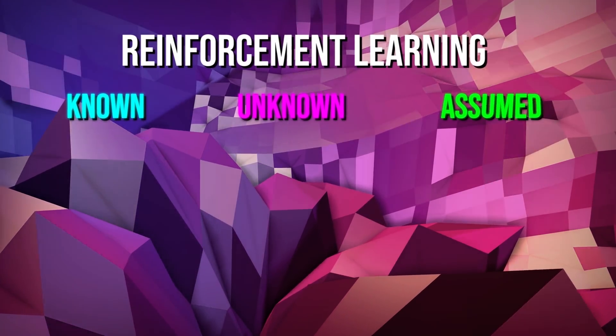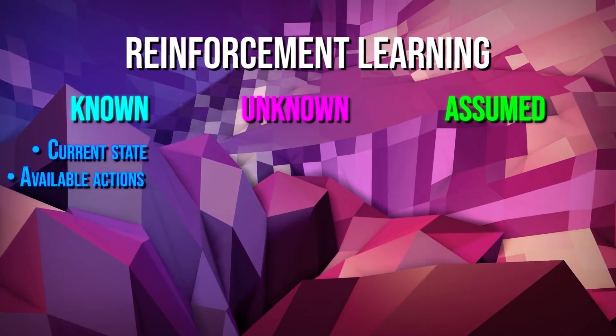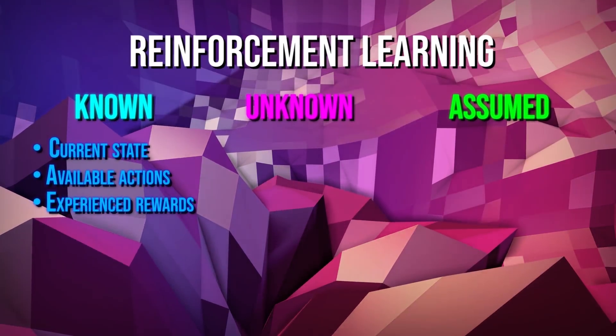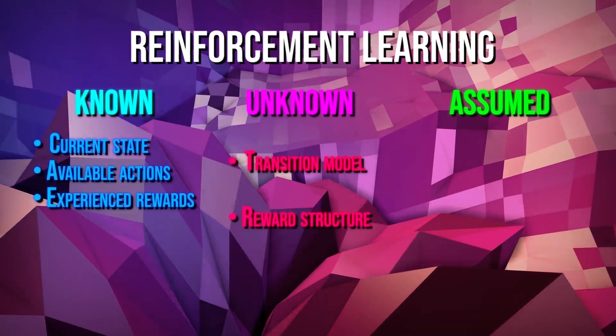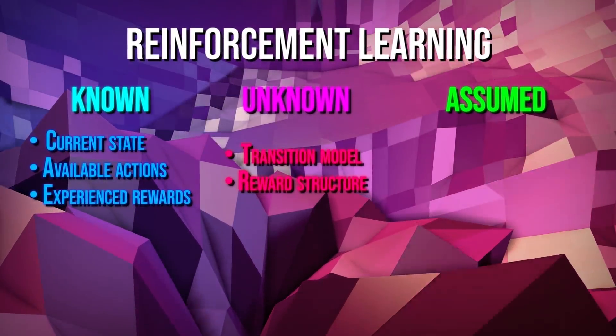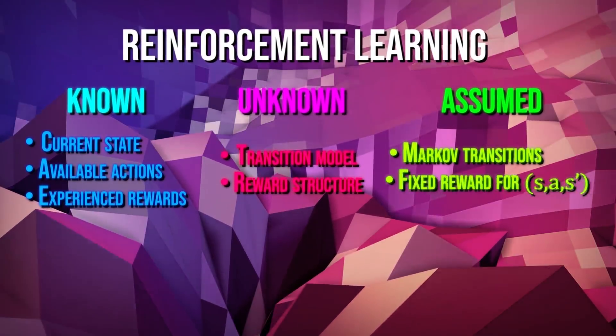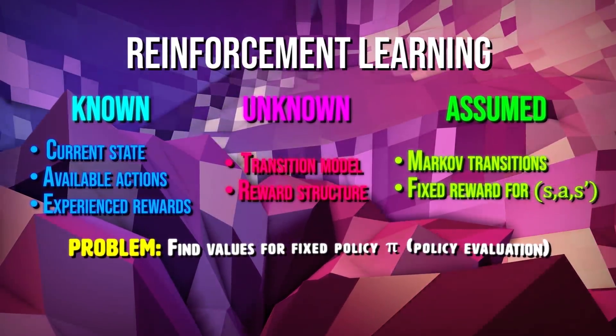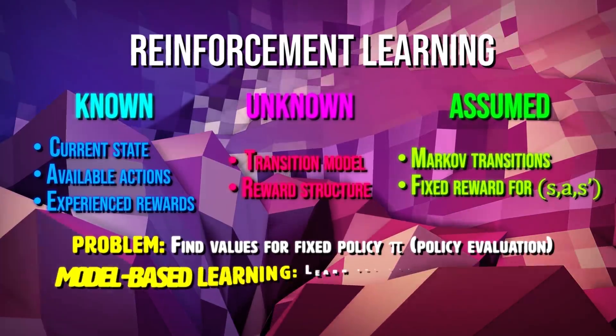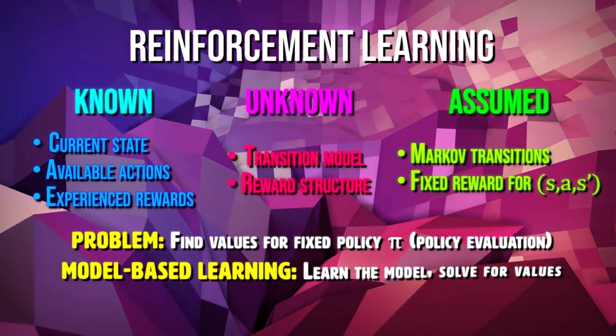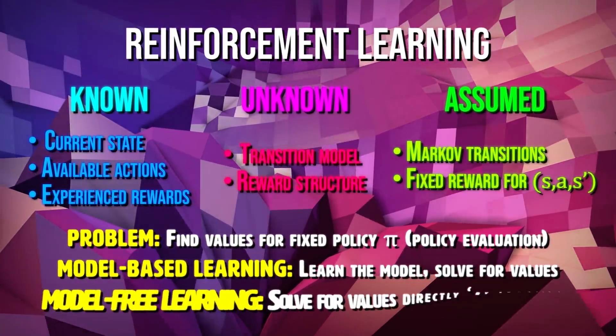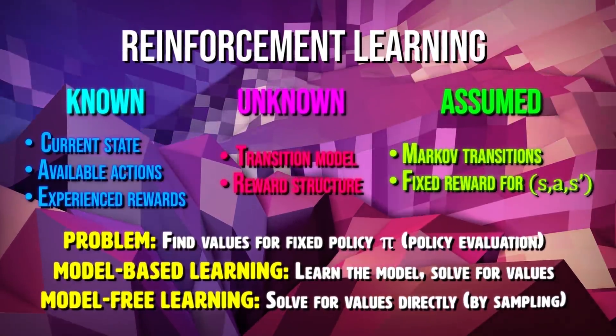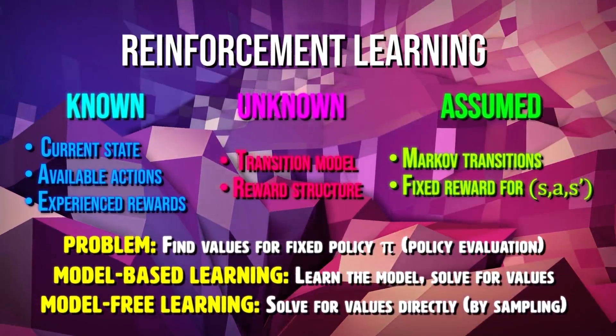In model-free RL, the first variable we miss is a transition model. So we won't know what's going to happen after each action we take beforehand. This tells us the probabilities associated with various state changes. The second thing we miss is the reward function, which gives the agent the reward associated with a particular state beforehand.